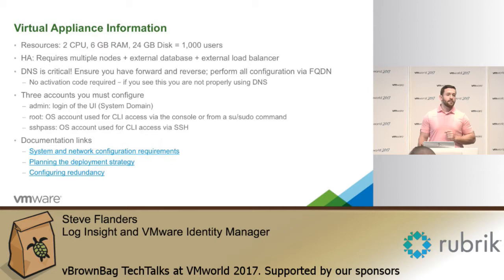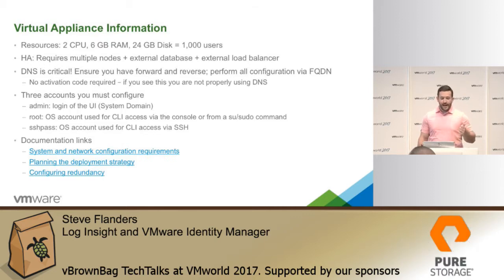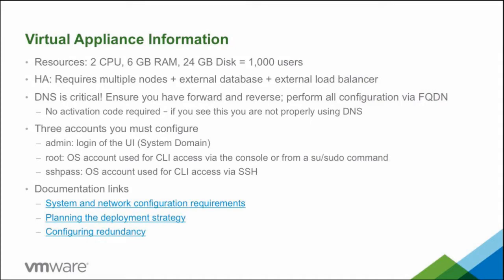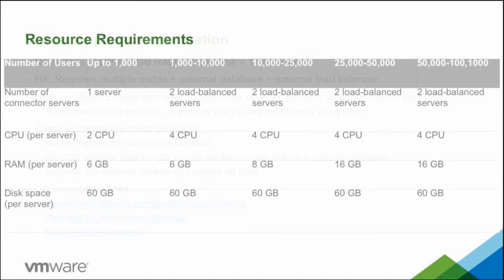There are three users on the VIDM appliance. There's an admin for the UI, there's root which you can't log into via SSH, and then sshpass is how you SSH into the virtual appliance — and you can become root if you need to. I have links to all the official VMware Identity Manager documentation if you want more information. In terms of resource requirements, the default ships with two CPUs, six gigs of memory, and a 24 gig disk, which supports 1,000 users. As the number of users increases, the number of nodes and CPU, memory, and disk requirements increase as well — pretty standard model.